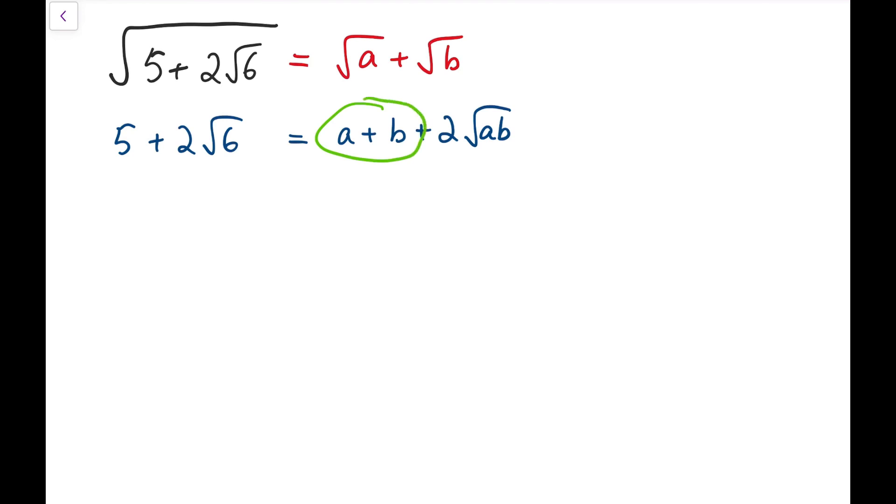Of course positive, because it's under the radical sign. So a plus b is positive while at the same time it is added by 2 times square root of ab and this 2 matches with this 2 and the square root signs match as well.